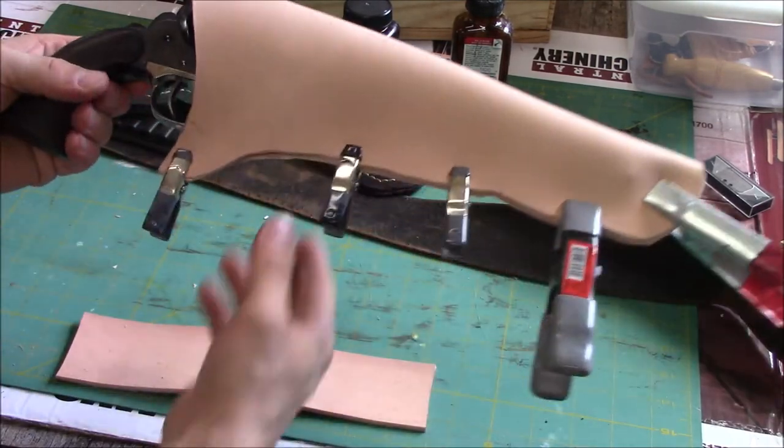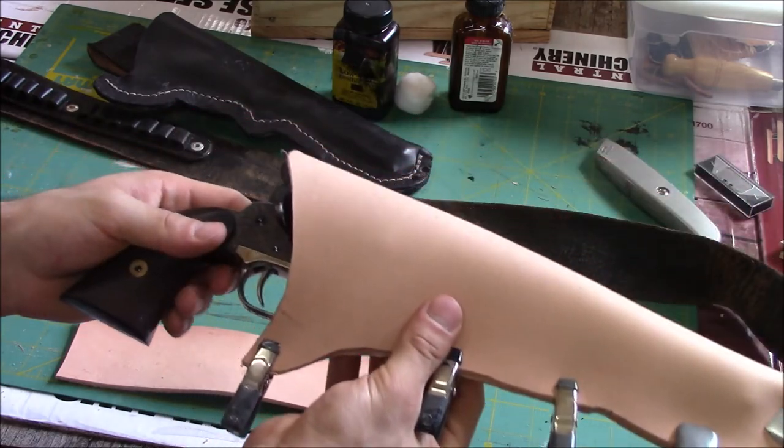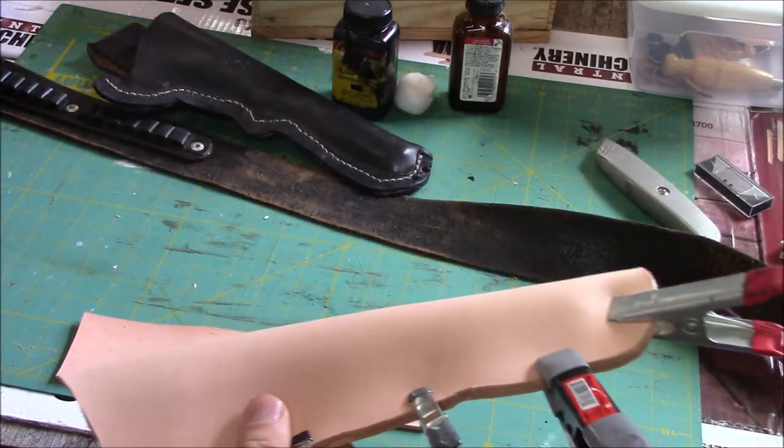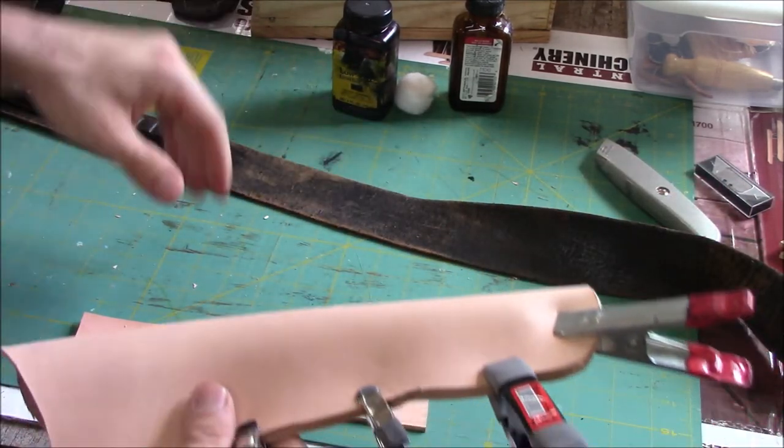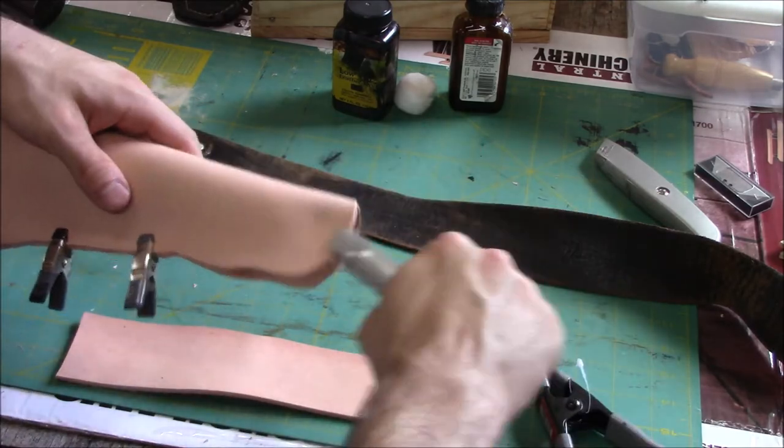And I got the rough form of the holster here, just see what it would look like. I'm going to take the pistol out. Now we're just going to dye everything. So I'm going to take these clips off real quick.